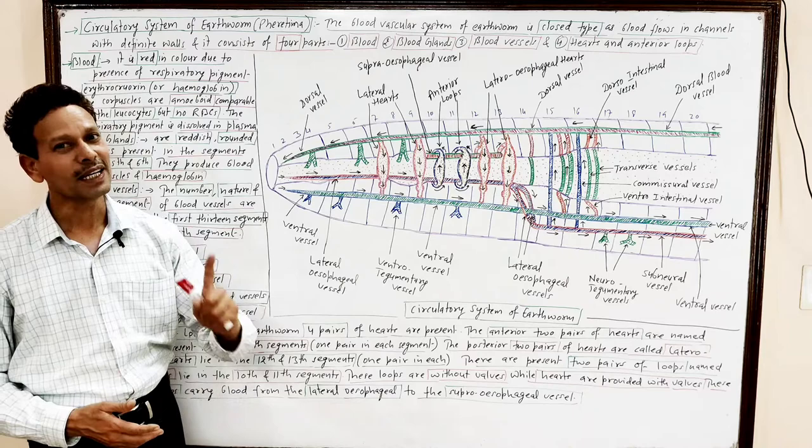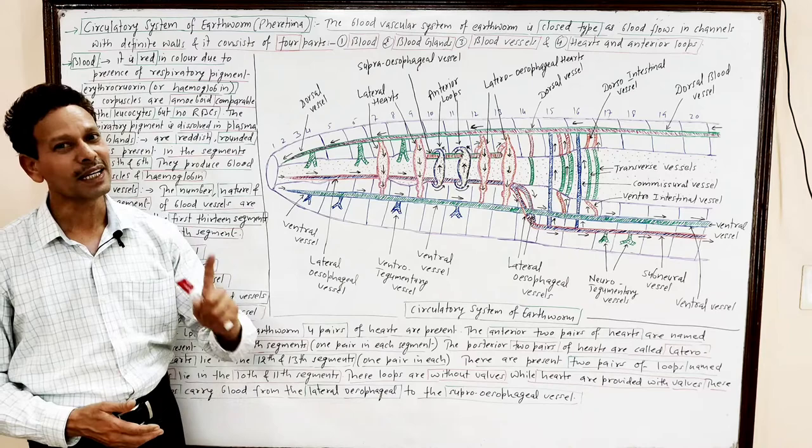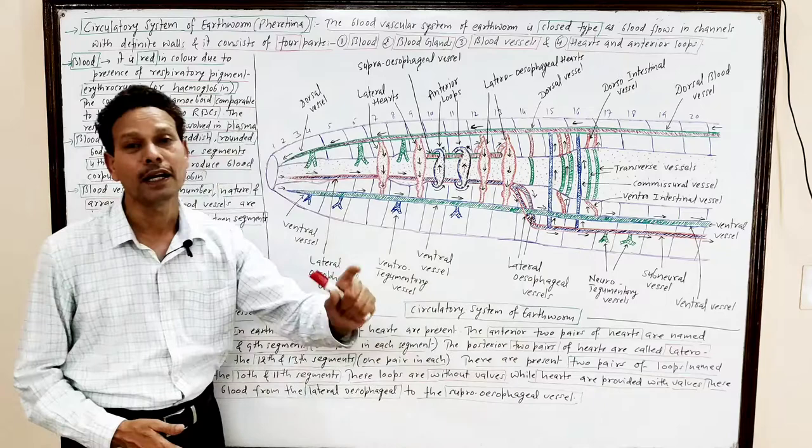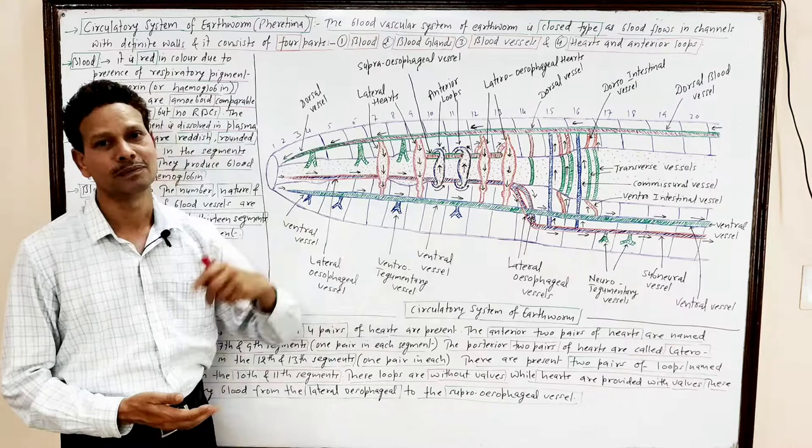Dear students, in today's lecture we will discuss the circulatory system of earthworm — the blood vascular system of Pheretima posthuma. In this animal, the blood vascular system is of closed type, as the blood flows through closed blood vessels.